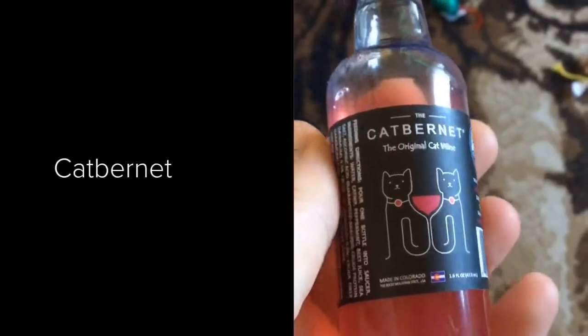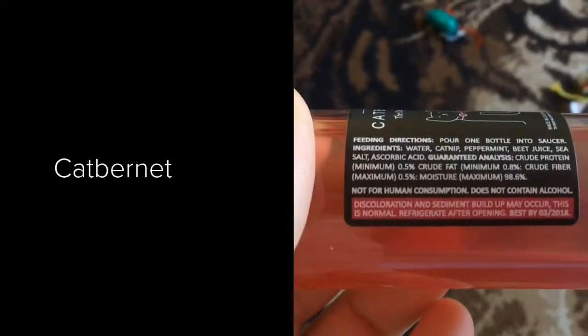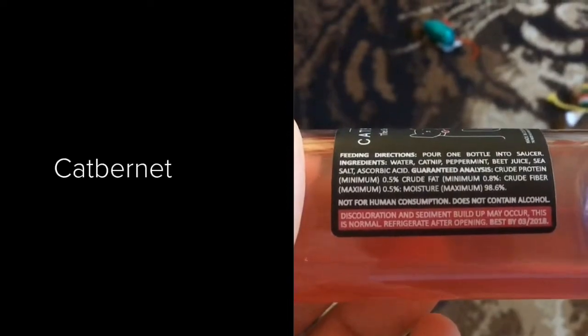Next we have the Catbernet. The ingredients in this one are water, catnip, peppermint, beet juice, sea salt, and ascorbic acid.